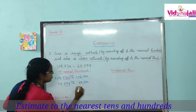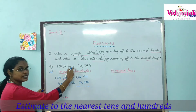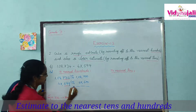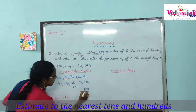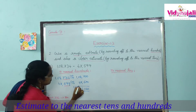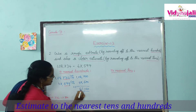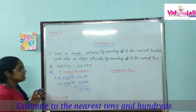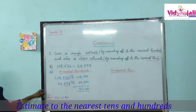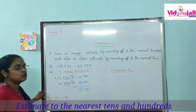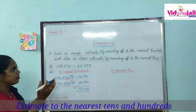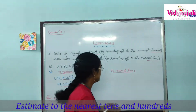Now we subtract the rounded numbers. 1,08,700 minus 47,600 gives us 61,100. That is the rough estimate.